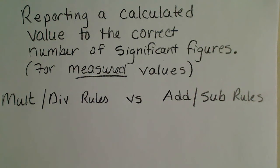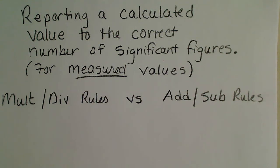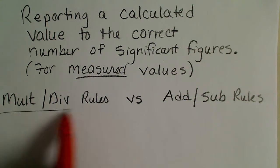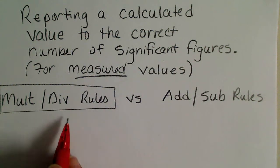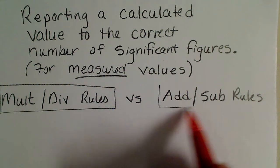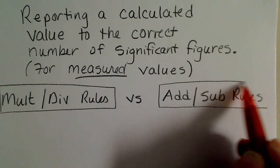In this video we are going to be doing calculations with measured values and then rounding our answer to the correct number of significant figures. When considering the rules for significant figures, we have to make sure we understand what mathematical operation we're doing. Most of the time we're going to be doing multiplication and division in chemistry, and those rules are going to be completely separate from the addition and subtraction rules.